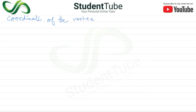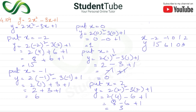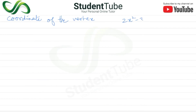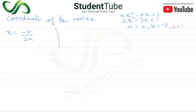Our equation is y = 2x² - 3x + 1, which is of the form ax² + bx + c. So here a = 2, b = -3, and c = 1. The x-coordinate of the vertex is x = -b / 2a = -(-3) / (2×2) = 3/4.